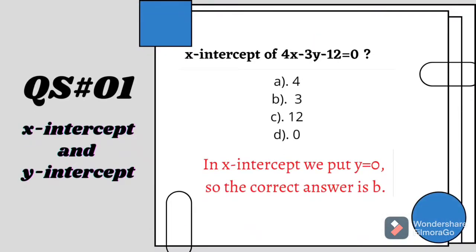And now the questions in the exams like this. x-intercept of 4x minus 3y minus 12 equal to 0. So we have to find the x-intercept. So here always y equals to 0. So if you put y equals to 0 then 4x is equal to 12 and ultimately x is equal to 3. So the correct answer is b.